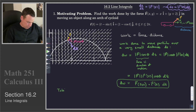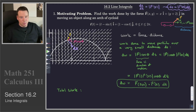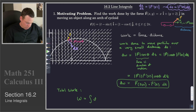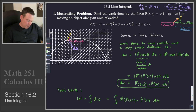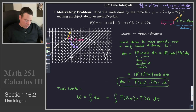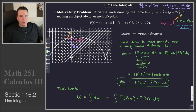The total work is found by summing over all of these little work elements. As we let the length of the curve segments tend to zero, this becomes an integral. So the total work means we integrate over all work elements, and we just found that each element is F dot r'(t) dt. So the total work is the integral of F · r'(t) dt. This shows us the kinds of integrals we're interested in with vector fields — integrating a vector field along a curve, which in this case gives us the work.